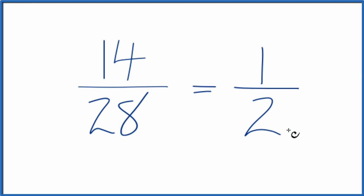There is another way we could do this, though. We could, since they're even numbers, divide both of them by 2. 14 divided by 2 is 7. 28 divided by 2 is 14.